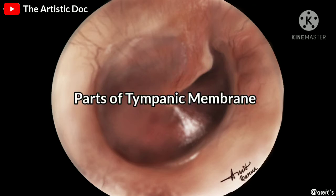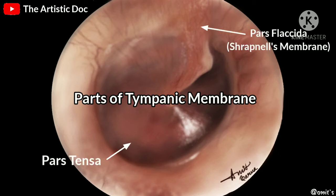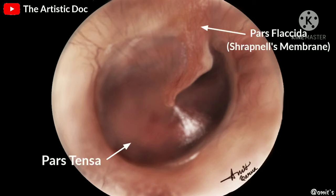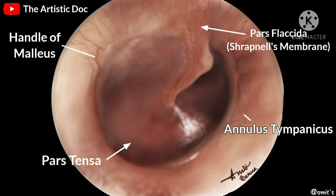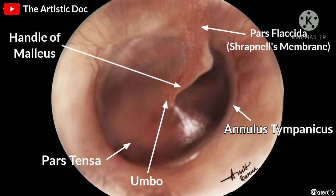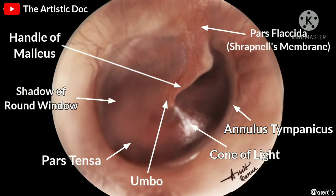The tympanic membrane can be divided into two parts: pars tensa and pars flaccida. The thickened peripheral portion of the pars tensa is called the annulus tympanicus. The central part of the pars tensa at the level of the tip of the malleus is called the umbo. Note the cone of light in the anterior inferior quadrant.